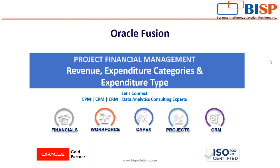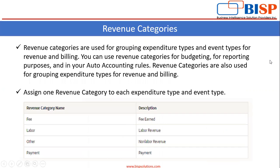We will start with what is revenue category. Revenue categories are used for grouping expenditure types and event types for revenue and billing. You can use revenue categories for budgeting, for reporting purposes, and in your auto accounting rules. You have to assign at least one revenue category to each expenditure type and event type.